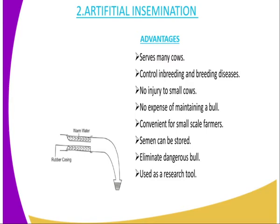Then it eliminates the dangerous bull. The characteristic of a dangerous bull is eliminated because in AI service, semen is only collected from bulls with good temperament. It is also used as a research tool — semen is collected from bulls with the aim of doing research in order to get a proven sire.